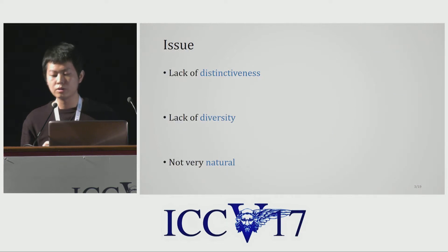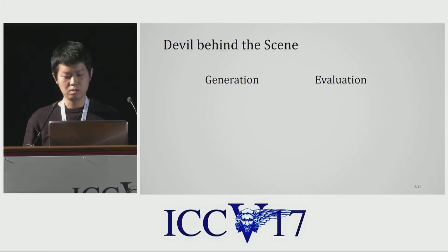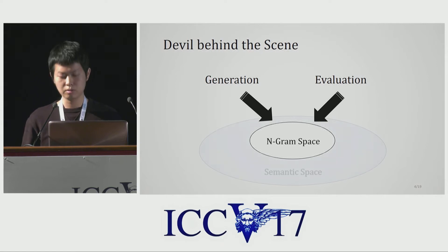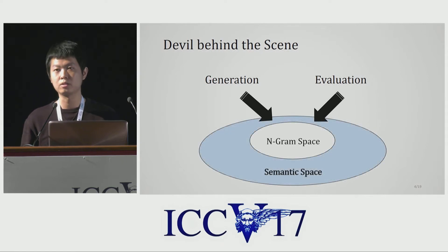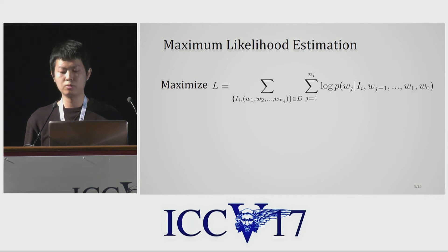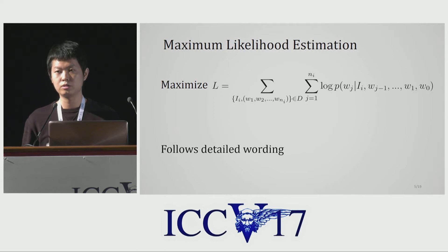Sometimes this may also lead to ambiguity. These problems are not surprising because the generation and evaluation for current image captioning models are based on n-gram space, which is only a small subset of the semantic space. Specifically, when we train captioning models, we usually use maximum likelihood estimation, which computes the sum of log likelihoods of each word conditioned on the input image and its previous words. Such objectives encourage the model to follow the detailed wordings of training captions.